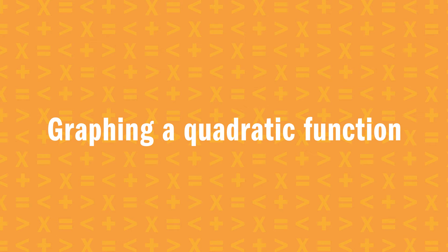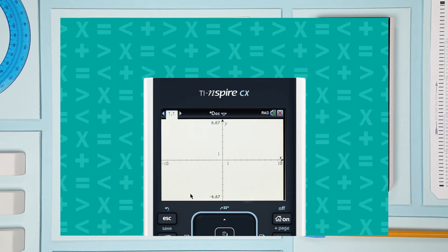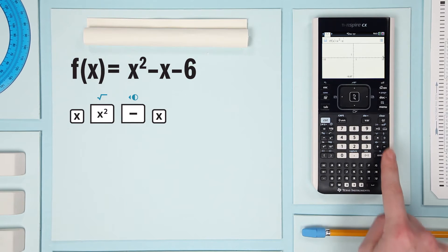Here we'll graph a quadratic function and determine some points of interest. Let's start with this quadratic. On a blank graphs page, press tab to get an entry line. Enter the function x squared minus x minus 6.